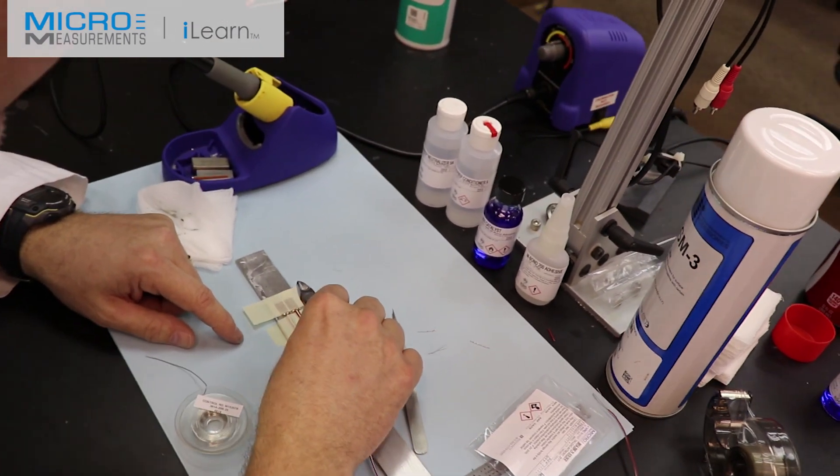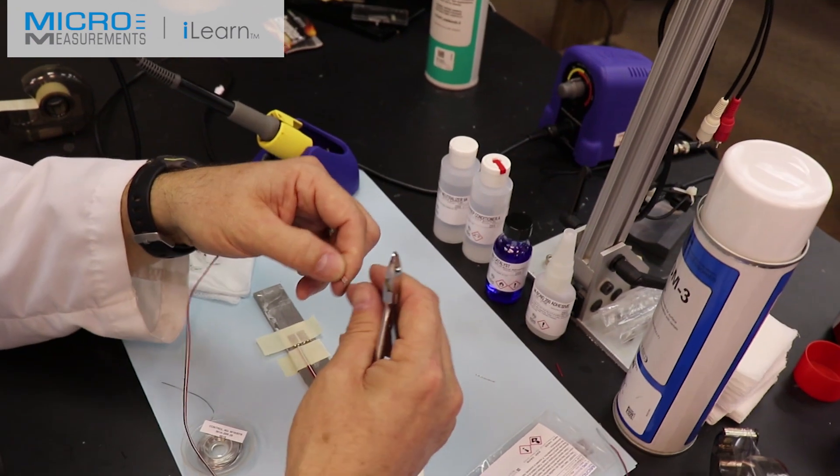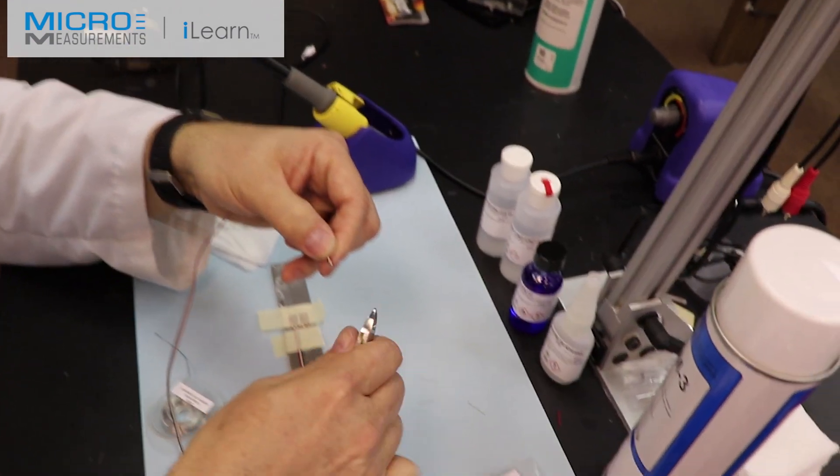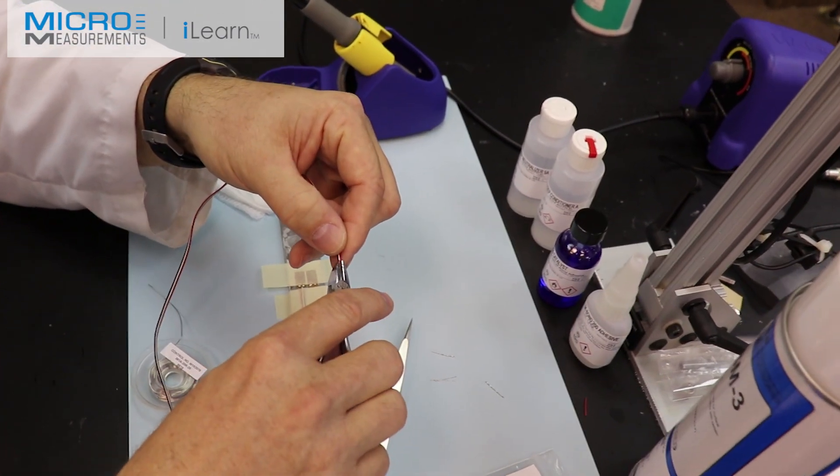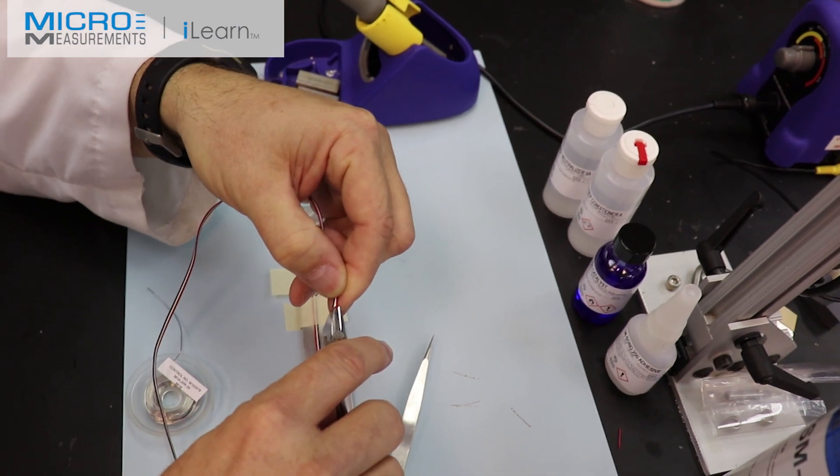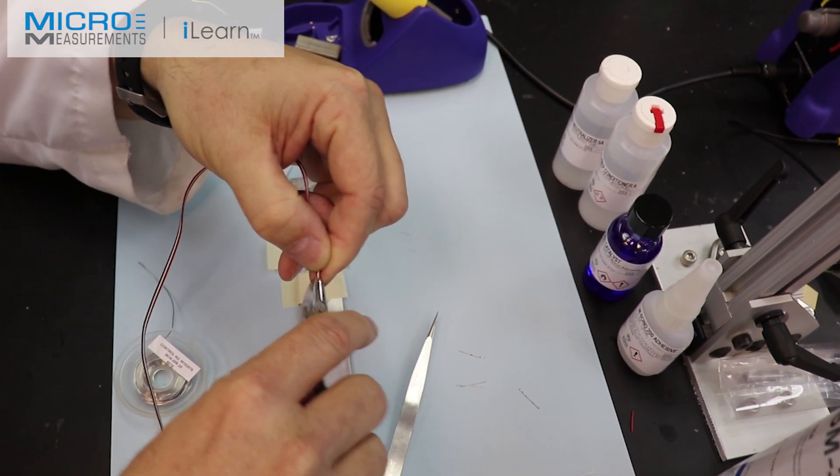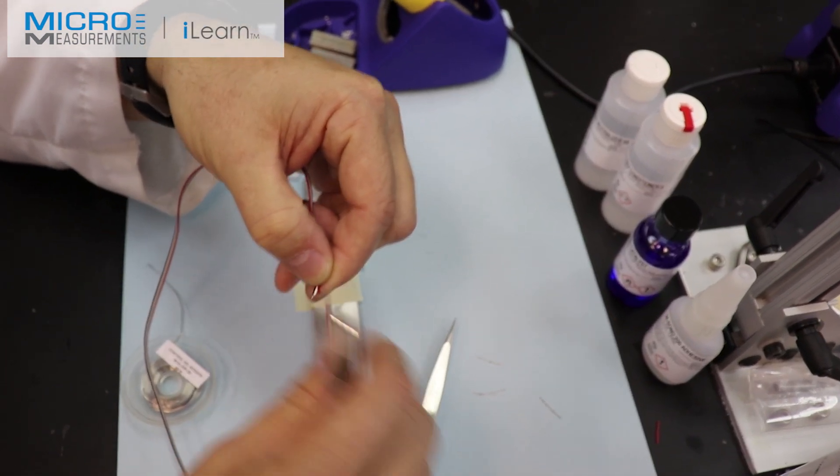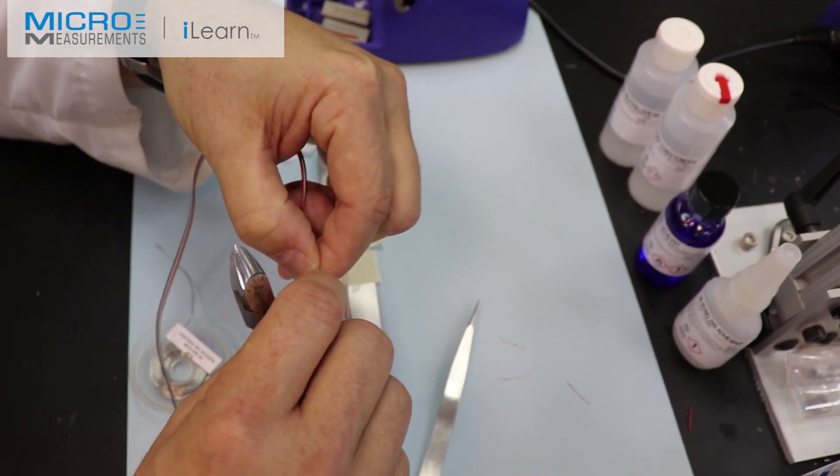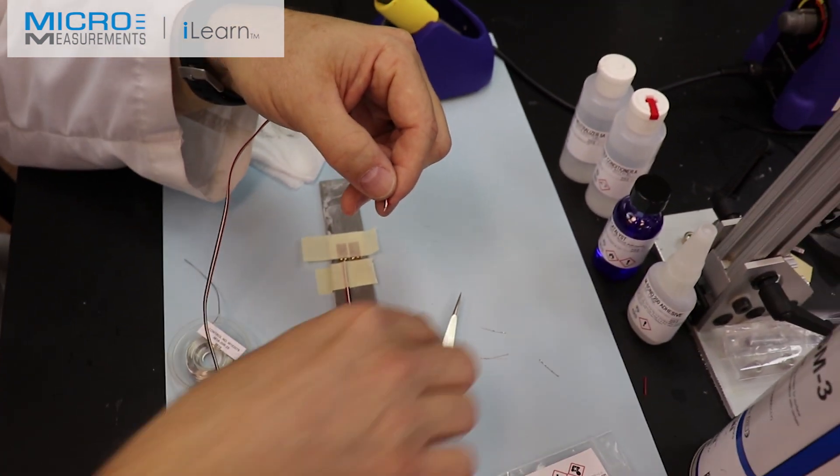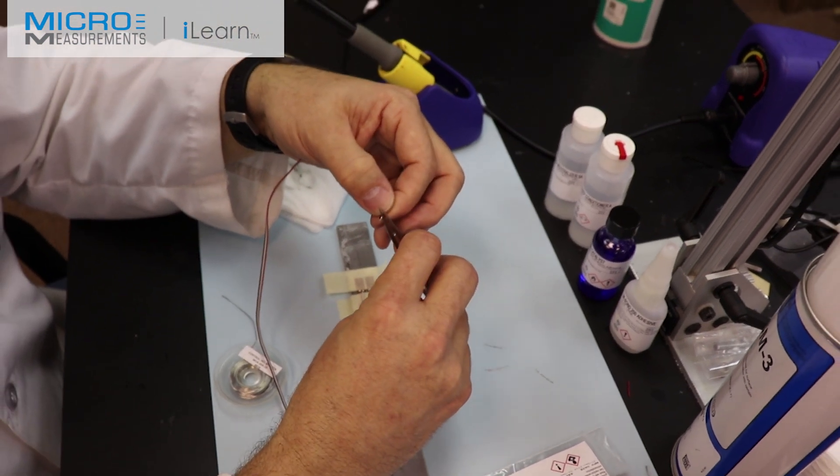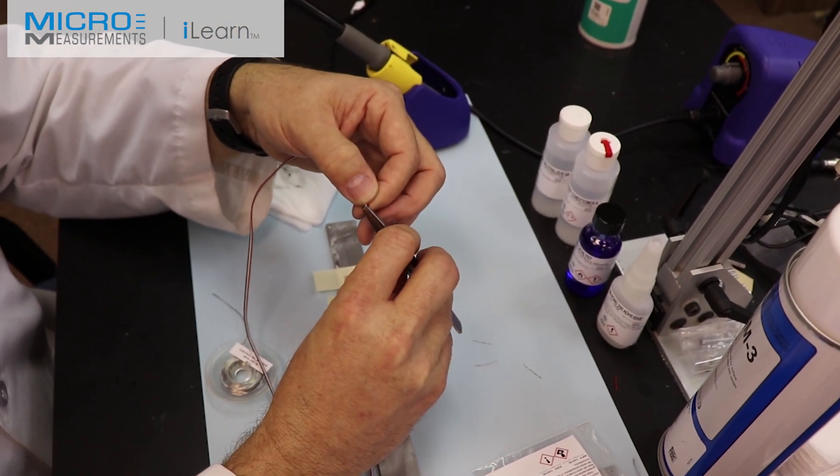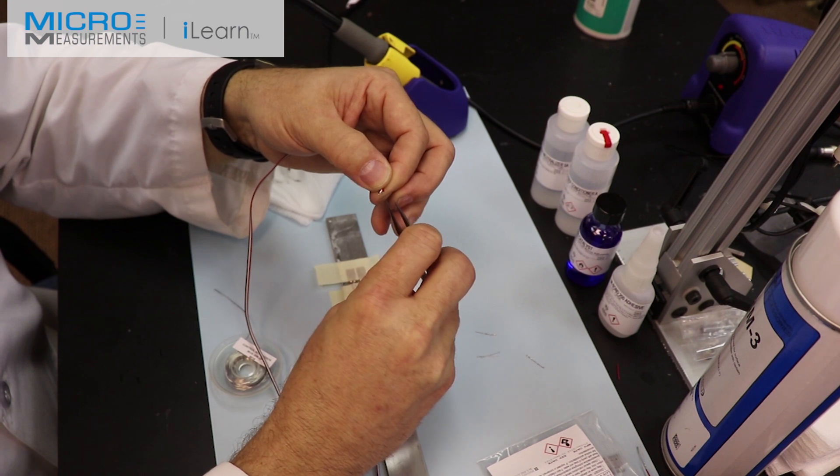That looks about right. So then I will also, again, just like before, I'll nick the insulation between the red and the white conductor. And that just allows me to kind of move things around a little bit. So I'll take my tweezers and I'll kind of shape it a little bit, just so that it matches up to the tabs of the strain gauge.